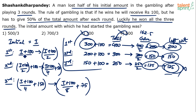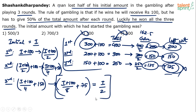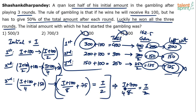Since he lost half of his initial amount, he is left with i/2. So we set (i + 100)/8 + 75 equal to i/2. Multiplying through: i + 100 + 600 equals 4i, which simplifies to i + 700 = 4i, giving 3i = 700, so i = 700/3. Option 2 is the answer.